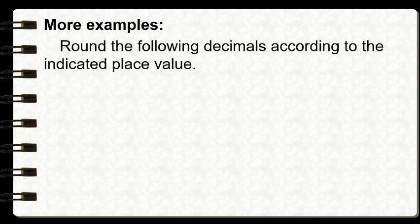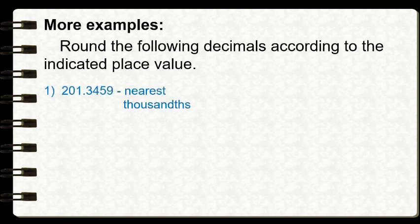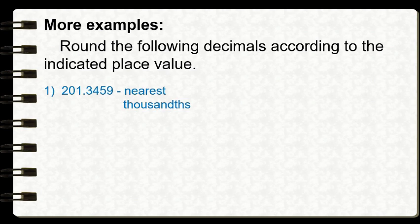Let's try some examples. Round the following decimals according to the indicated place value. Number one: two hundred one and three thousand four hundred fifty-nine ten-thousandths, rounded to the nearest thousandths. When we round a decimal number to the nearest thousandths, we apply similar rules as before. First, we identify our rounding place — the thousandths place — which is occupied by the digit five.